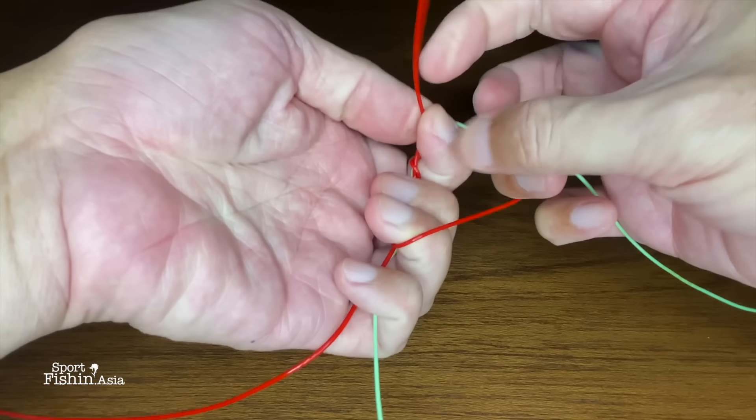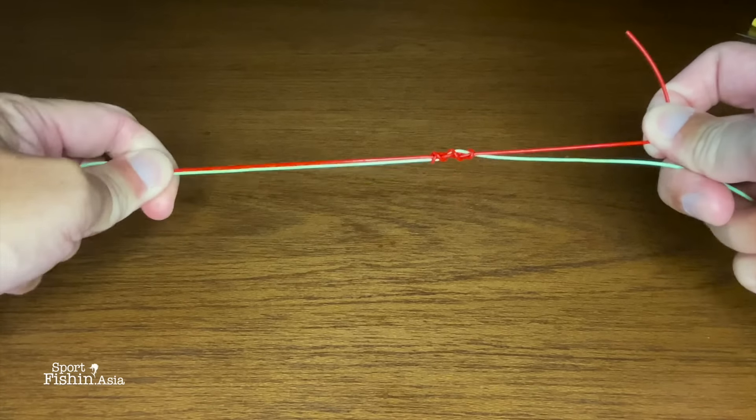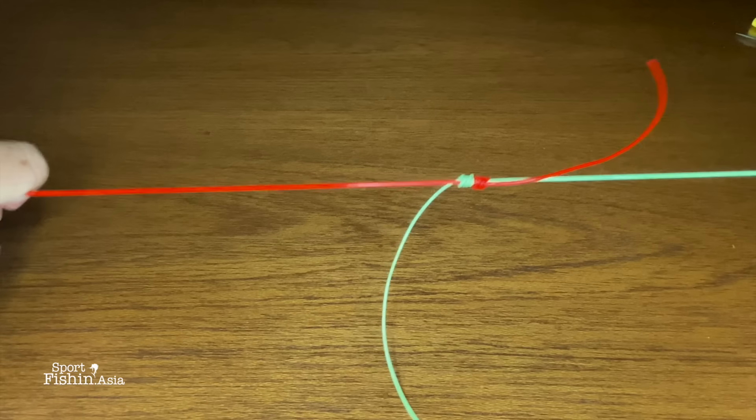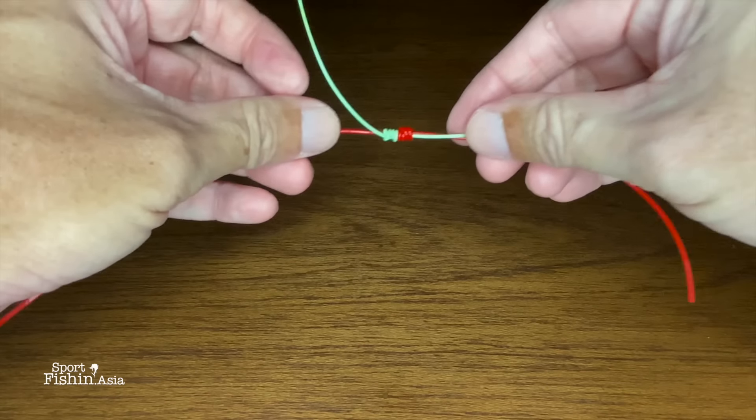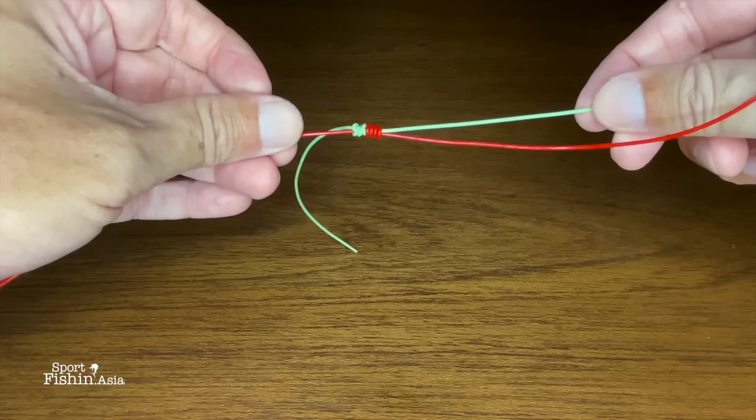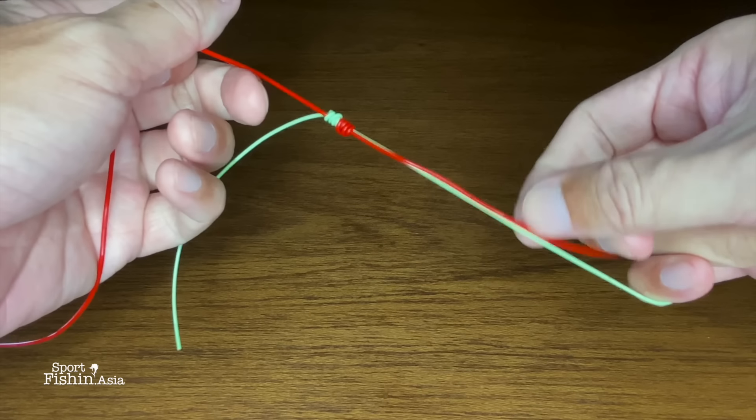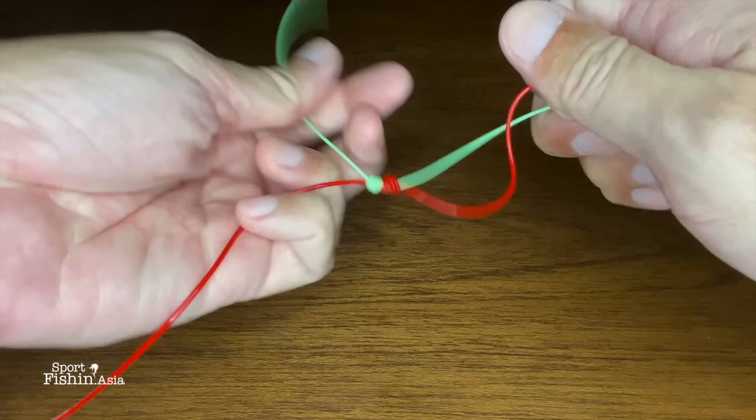Four wraps here again, and then you pull it tight. Once you've done that, pull both lines tight so both knots will meet. Pull the tag end and make sure everything is tight.